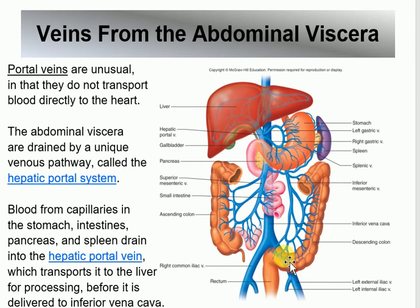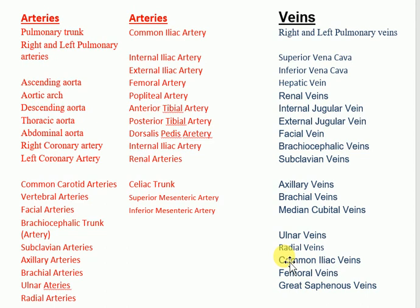Let me review structures from the list I may have missed. The pulmonary trunk dividing into right and left pulmonary arteries — done. Ascending aorta, aortic arch, descending aorta thoracic and abdominal — done. Right and left coronary arteries — done. Common carotid, facial artery, brachiocephalic trunk, subclavian, axillary, brachial, ulnar, radial — done. The vertebral artery I didn't mention — I'll show you that.